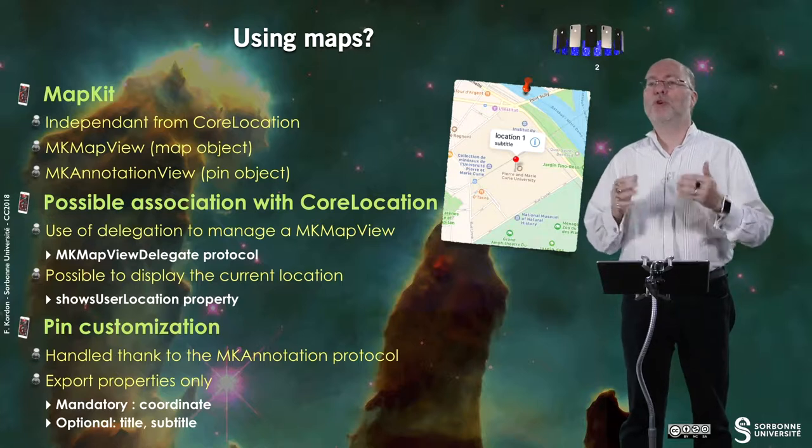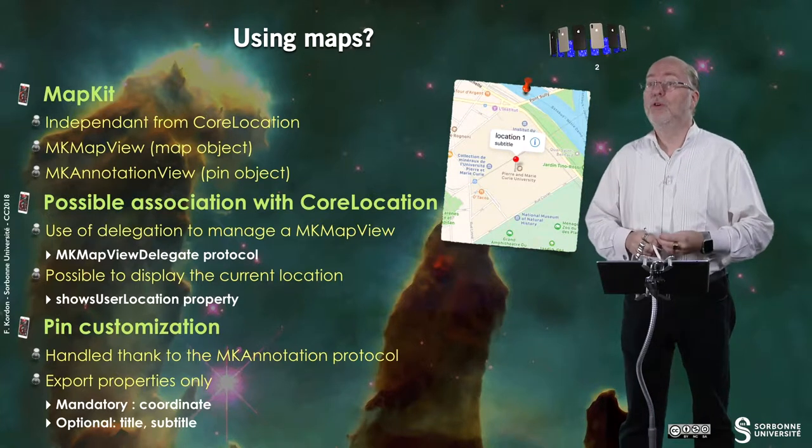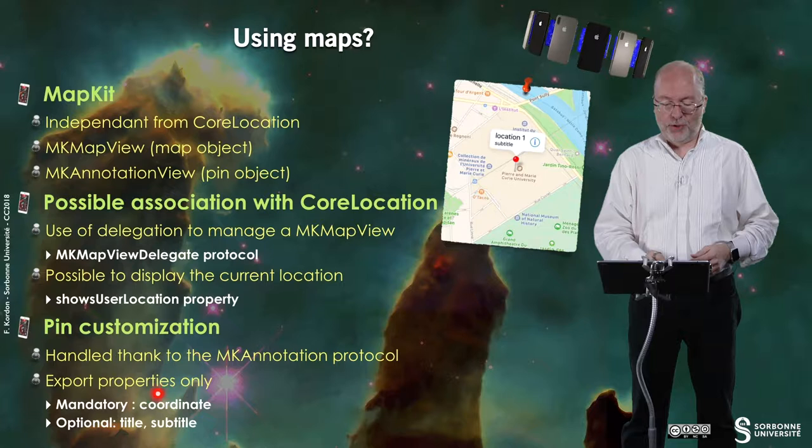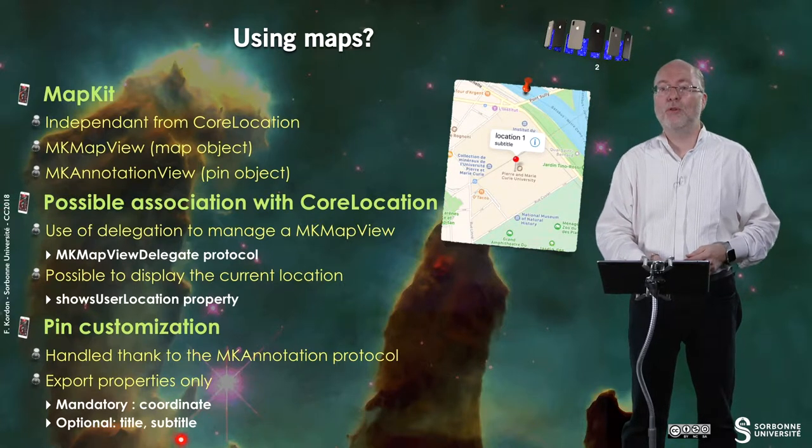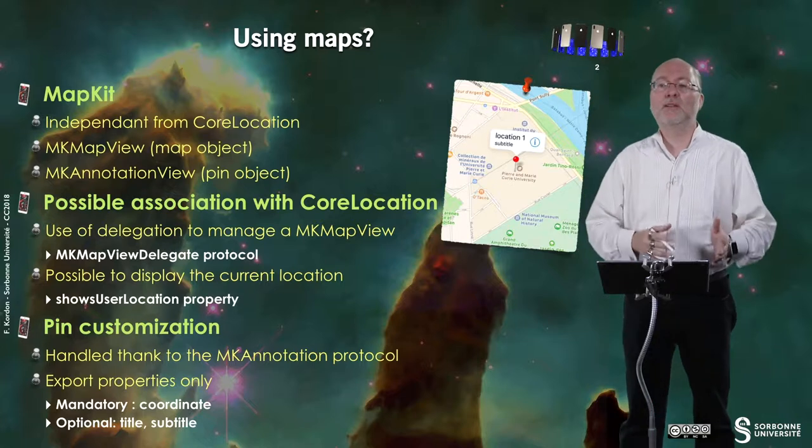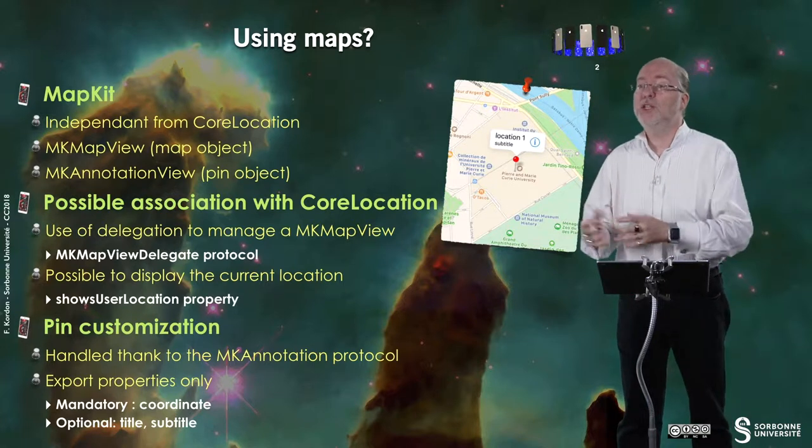It's also possible to display the current location on the map, and there is then a property called showUserLocation you can just set to true. You can also customize the pin thanks to another protocol called MKAnnotation, and in fact this protocol only exports properties. The mandatory properties are the coordinate of the pin, but you can also have optional properties like a title and a subtitle, and you can also enrich this information. So you can manipulate a map either manually or thanks to handlers associated to the protocol.